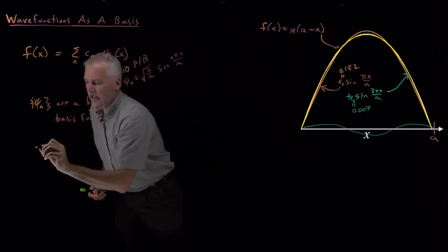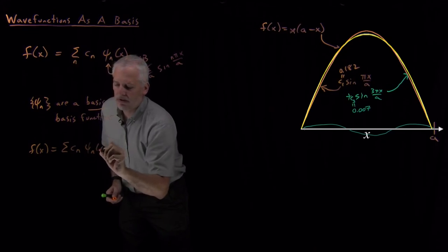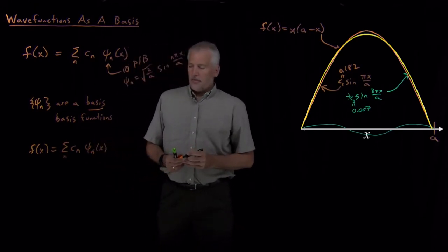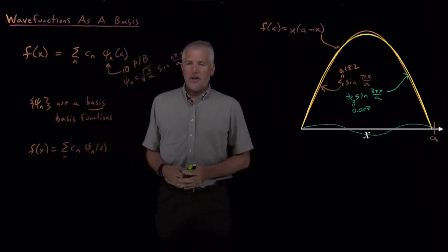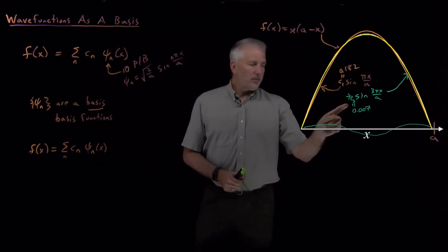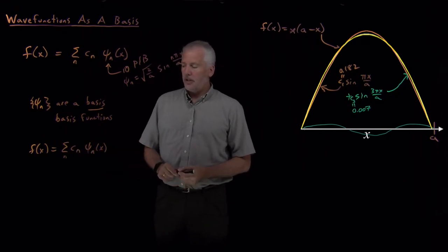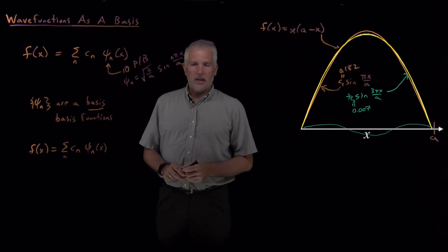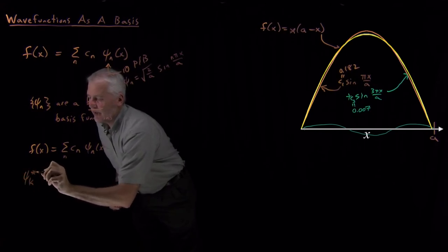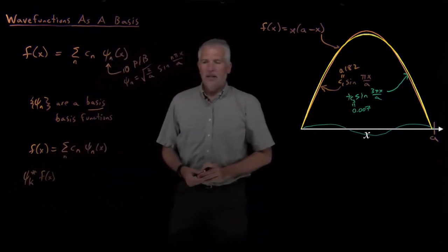Let's go back to the expression: the function is the sum of a bunch of wave functions multiplied by some coefficients whose values we're interested in finding. To isolate the coefficients, I can choose the particular coefficient I want to know — maybe c₃, c₅, or c₇. If I take the k-th coefficient and multiply both sides of this equation by ψ_k with a complex conjugate on the left, then on the right each term of the sum also includes ψ_k*.